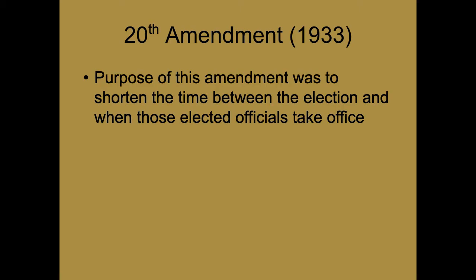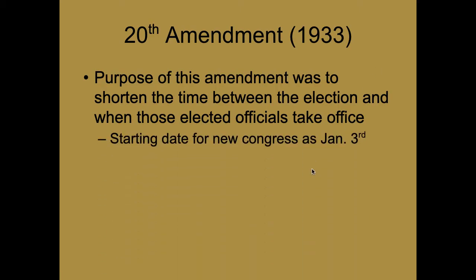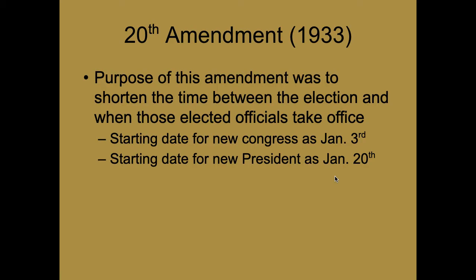For example, if Joe Biden beats President Trump in November but doesn't take office until March, Trump would still be president until March. The 20th Amendment didn't eliminate that lame duck period, but it shortened it — changing it from March to January. Congress now takes office on January 3rd, and the president takes office on January 20th.